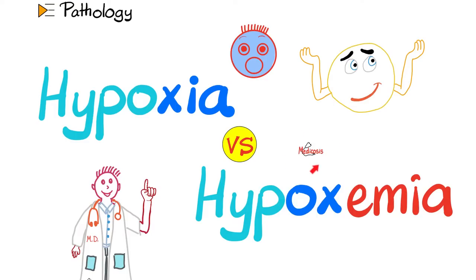In previous videos, we talked about cell injury, which is a reversible process, and we said that the most common cause of cell injury is hypoxia or anoxia, which means less tissue oxygenation. And in the last video, we talked about hypoxia in general and the famous causes of hypoxia. Please watch the previous video before this one. Today, we shall understand the difference between hypoxia and hypoxemia.